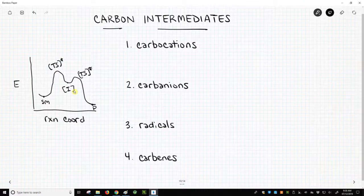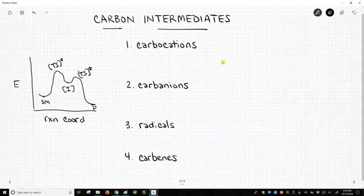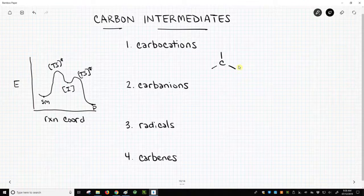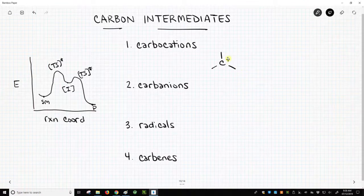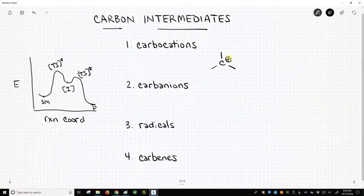Now in organic chemistry, we tend to talk about intermediates around carbon. So this video is really about the four carbon-based intermediates, and the first one is the carbocation. Carbocations are carbons with three bonds in which the carbon has a positive charge. This carbon does not have a full octet, so it's unstable.